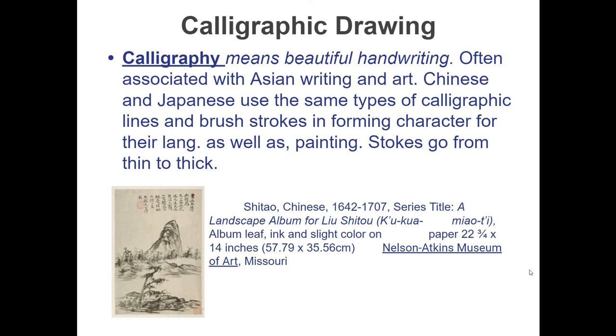Chinese and Japanese use the same types of calligraphy lines—different curves and skinniness. They're using the same type of lines and brush strokes, forming characters for their own language and paintings. They're making the same calligraphy lines, just spelling something else out. Strokes go from thin to thick depending on how you're holding your brush or pen.